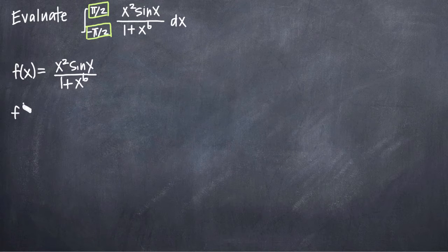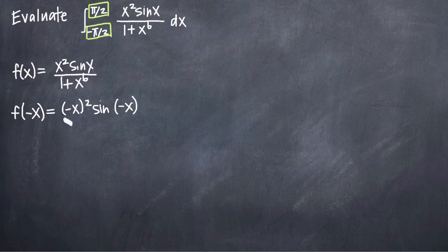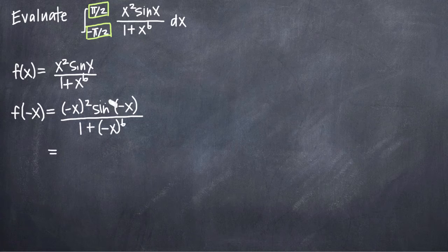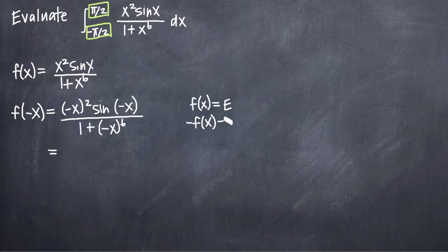The way that we test this is by plugging negative x in for x everywhere we see x in our function. We get negative x squared times sine of negative x, all divided by 1 plus negative x to the sixth. Remember: if the result is f of x — the same thing you started with — the function is even. If the result is negative f of x — the original function with a negative sign out front — the function is odd.